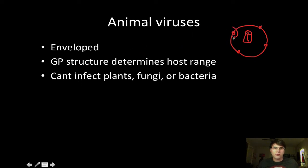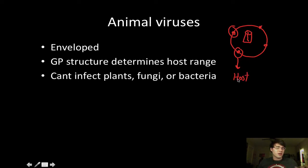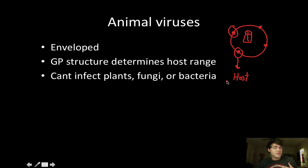The glycoprotein structures dictate the host range. For influenza, for example, it could be pigs, it could also be humans — it could be very broad or very specific. It could be certain types of cells, specific cells in a system, and the variation between that is very large.